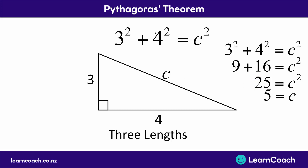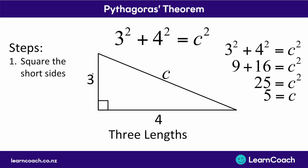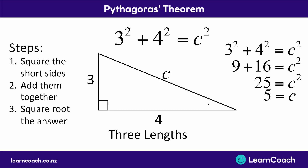Now we've found our answer for c simply by plugging in numbers. Just to go over the steps: your first step is going to be to square the short sides — square the 3 and then square the 4. Then you add them together like the formula tells you to. Finally, once you've added them together, square root your answer, because that's going to give you the final length. So 3 steps: square the 2 short sides, add them together, and then square root your answer — that gives you the long side.